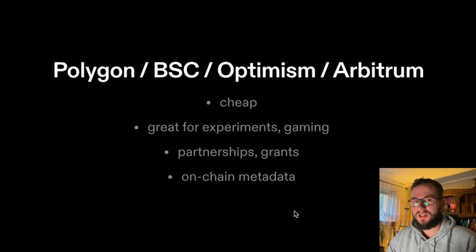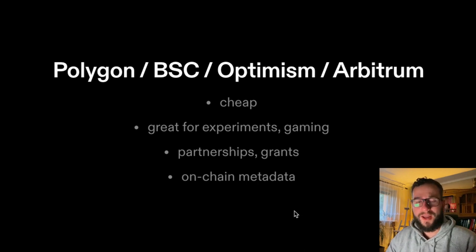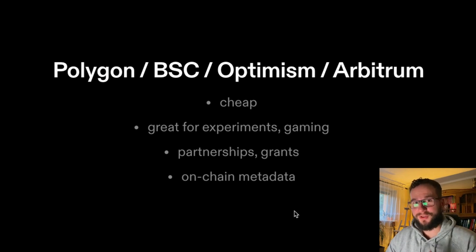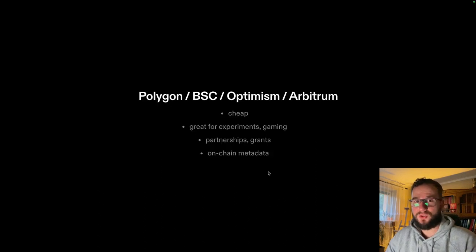The sidechains and second layer solutions like Polygon and Binance Smart Chain are way cheaper. For example, if you are deploying your NFT and sending it to your customers, it may cost one or two cents — it's super cheap. It's great for experiments and for gaming if you have a lot of NFTs to produce. I would consider going with Polygon because it's a very popular network and you won't lose much money deploying and distributing. On second layer solutions, you can also put some metadata on-chain, which is super expensive on mainnet but super cheap on Polygon and networks like that.